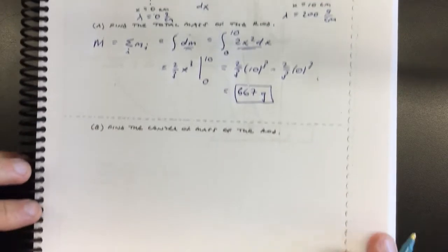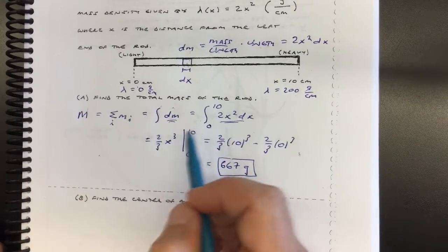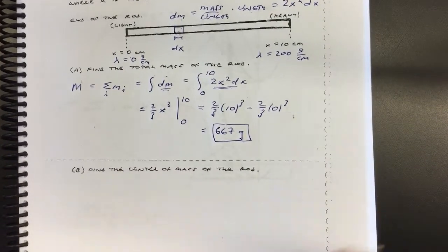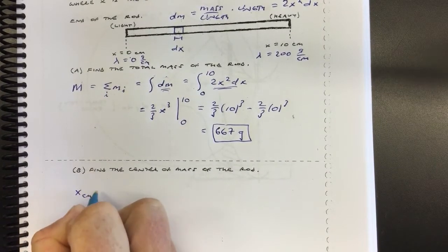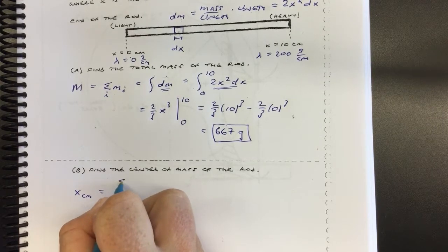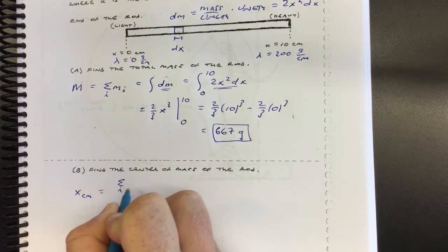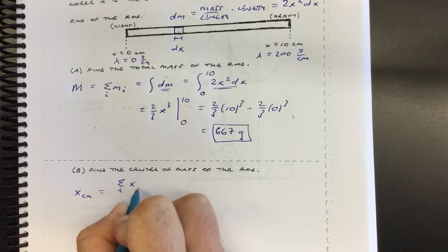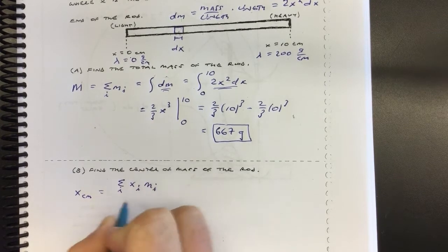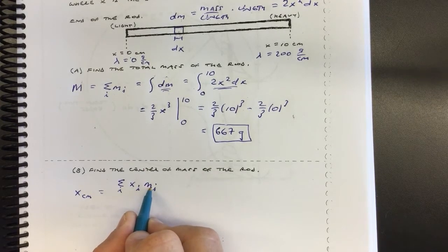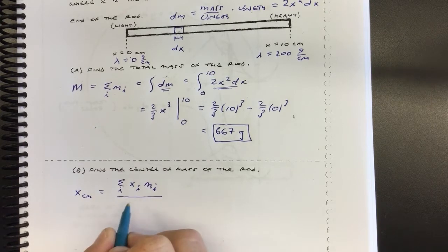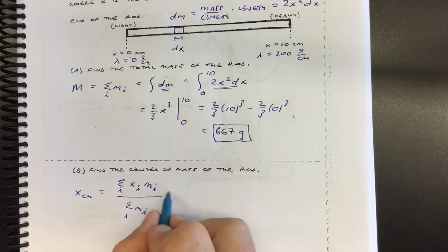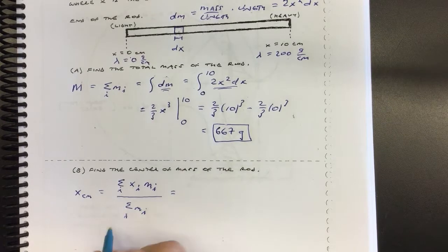The second part is to find the center of mass. If you remember how you do it with discrete objects: the center of mass is found by adding up each position times its mass — the sum of x sub i times m sub i — divided by the total mass, which is the sum of m sub i. So you're taking each position, multiplying by how much mass is there, and dividing by the total mass.